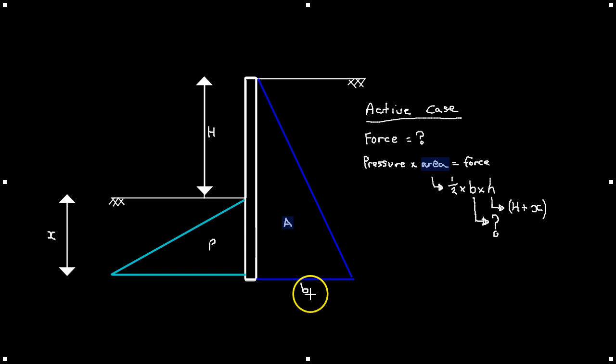Well, we've got to remember this is a pressure diagram. So if we were to calculate the pressure at this point, it would be Ka times sigma v. Ka being the coefficient of active pressure and sigma v being the vertical stress. So we've got our base and we've got our height. Now we just need to halve it.